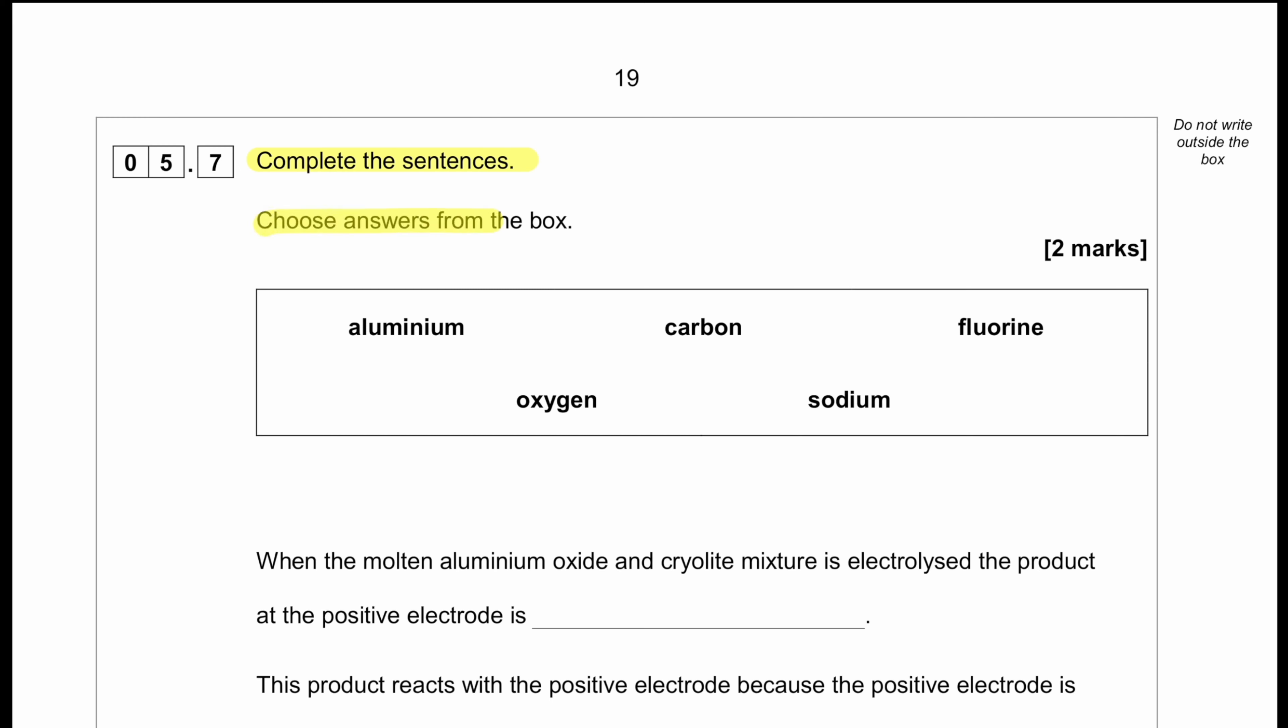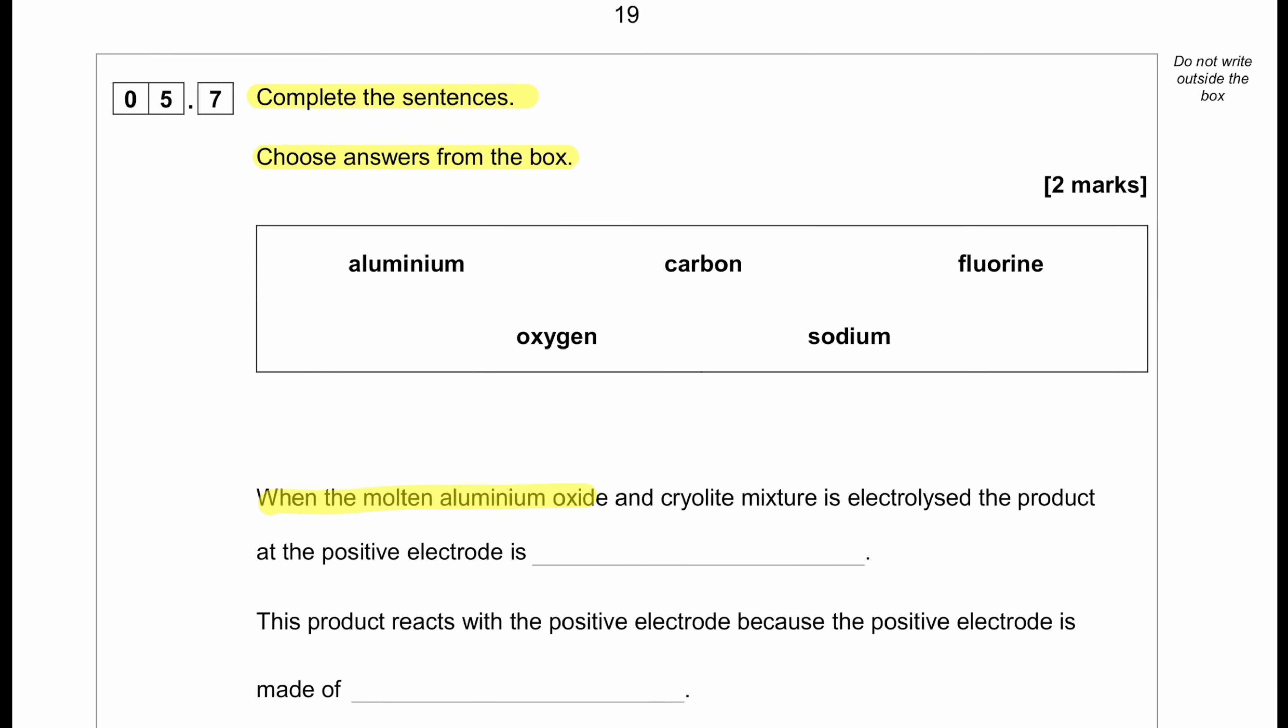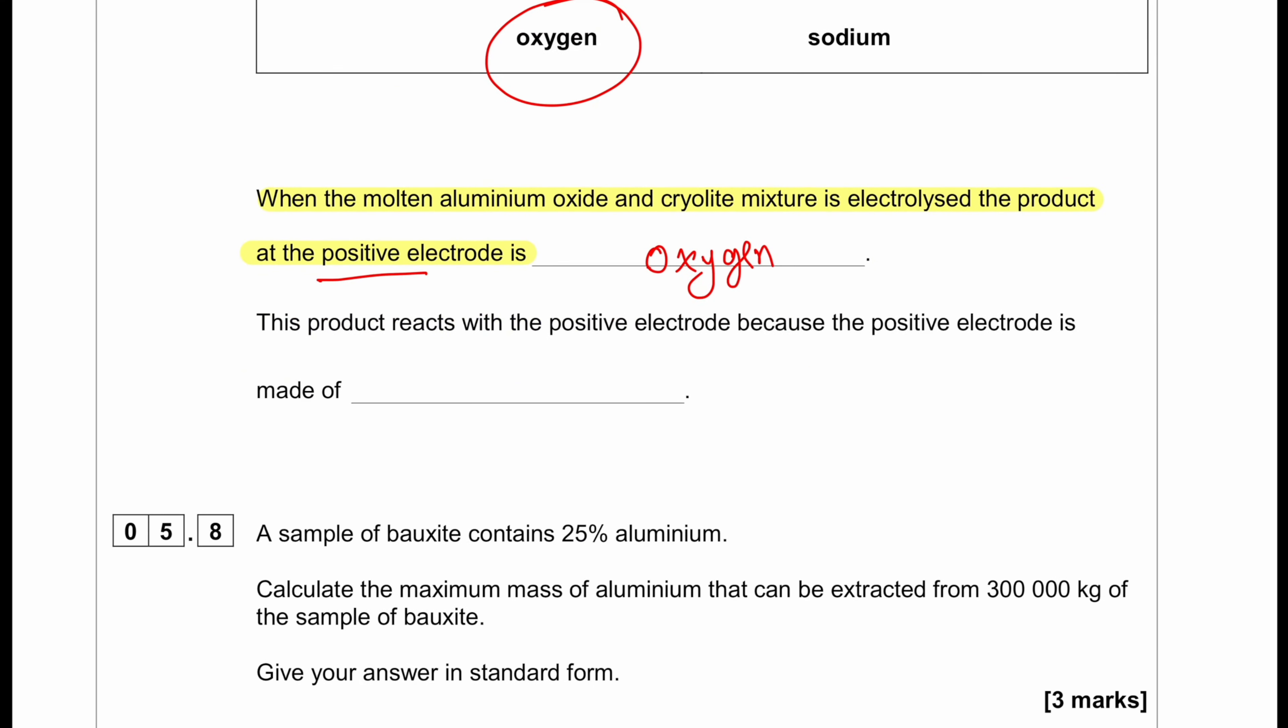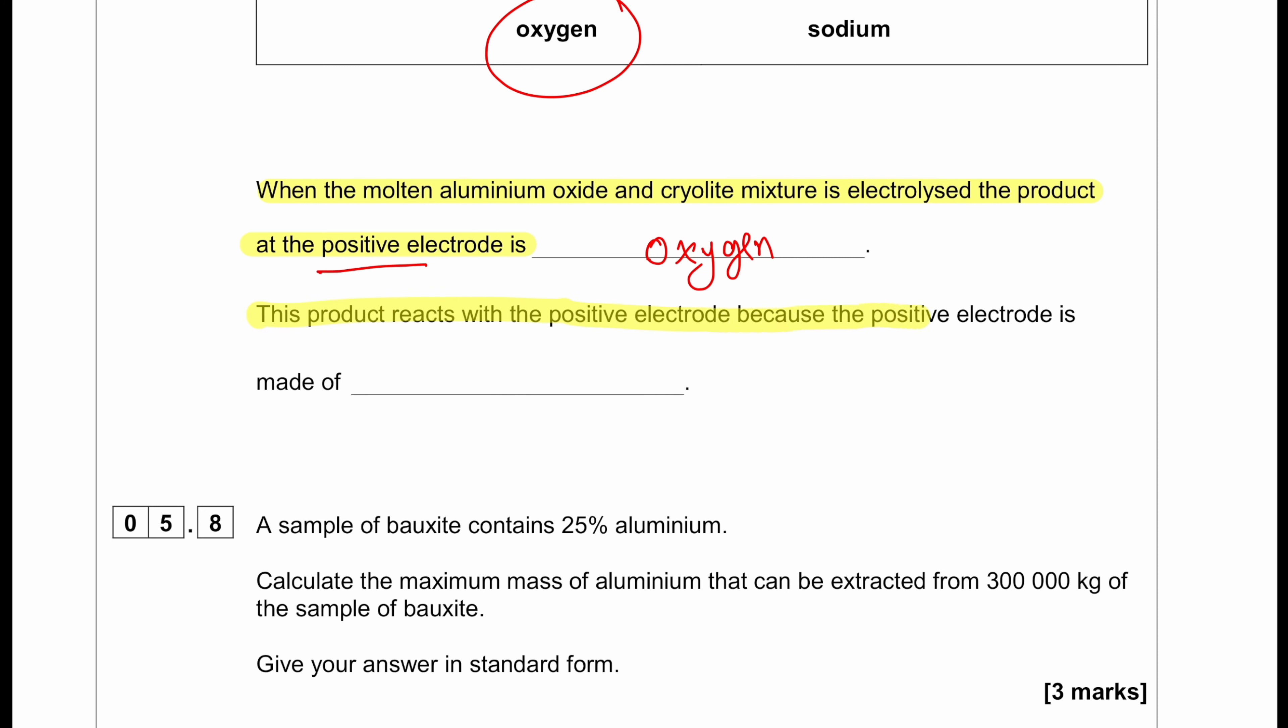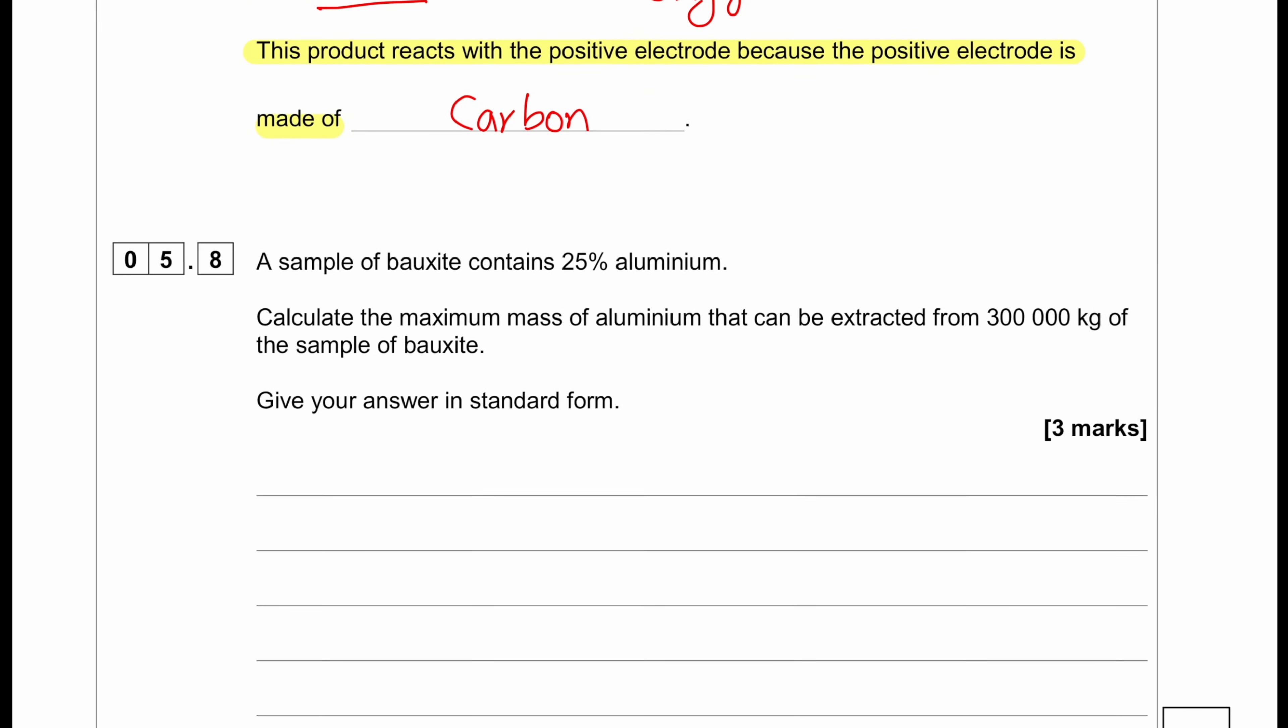Complete the sentences. Choose answer from the box. When molten aluminium oxide and cryolite mixture is electrolyzed, the product at the positive electrode is? So the product at the positive electrode. Positive electrode is going to attract negative ion. So definitely it's going to attract oxide ion. So oxygen will be produced. This product reacts with positive electrode because the positive electrode is made of carbon. We know that the positive electrode in electrolysis of aluminium is made from carbon. So oxygen reacts with carbon to produce carbon dioxide.